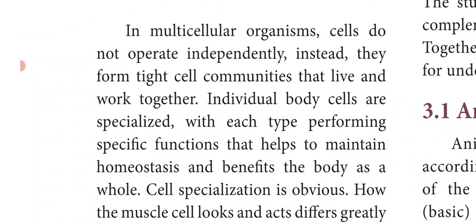In the last class on Kingdom Animalia, we discussed about the different levels of organization. First is the cellular level of organization, in which the body is made up of only cells. Next is the tissue level of organization, in which the body is made up of tissues. Then the organ level, and finally the organ system level, which is the advanced level — here the body is made up of different organ systems such as the respiratory system, excretory system, and circulatory system.